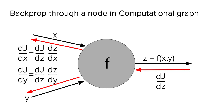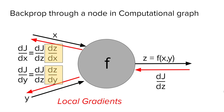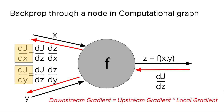Similarly, dJ/dy is equal to dJ/dz times dz/dy. To compute these terms, we would need to know the derivative function of f. This derivative function might depend on all the inputs and outputs — that is x, y, and z. Hence, if we have values of x, y, and z, we can compute the gradients. The insight here is that all these values needed to compute the gradient are local to the node. At a node, you know the value of all the inputs and outputs and can compute the derivative using data stored at the node. Hence, we call them the local gradients. The downstream gradient along each input edge is the product of the upstream gradient and the local gradient.